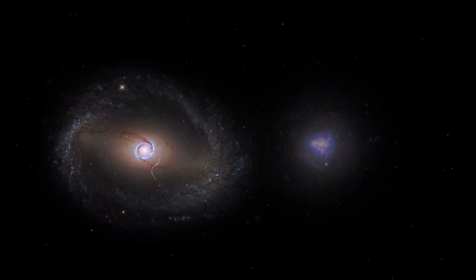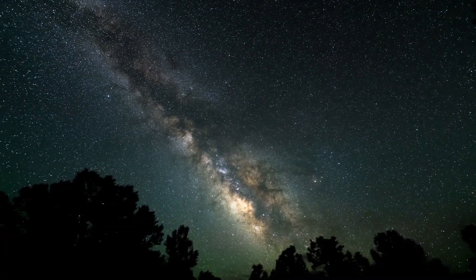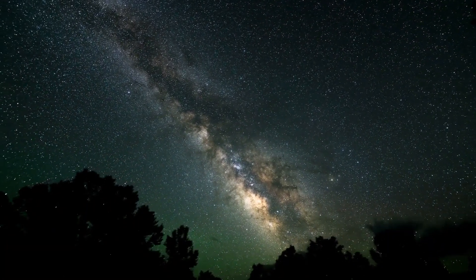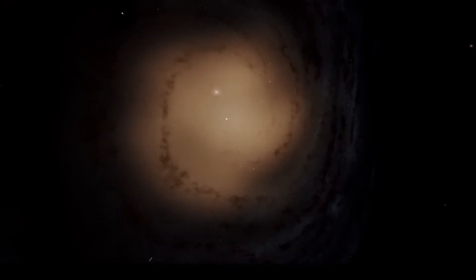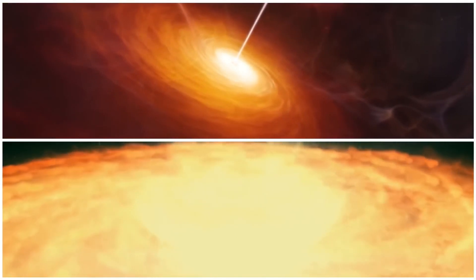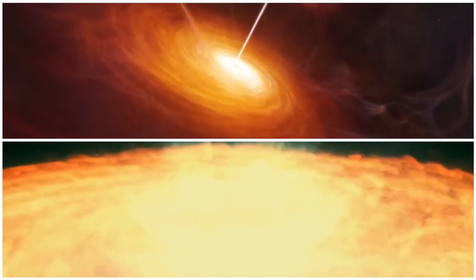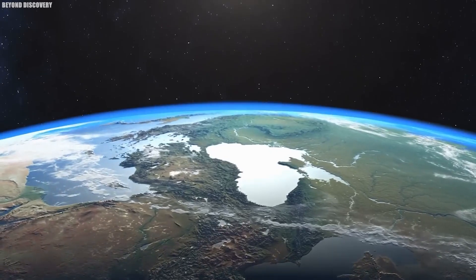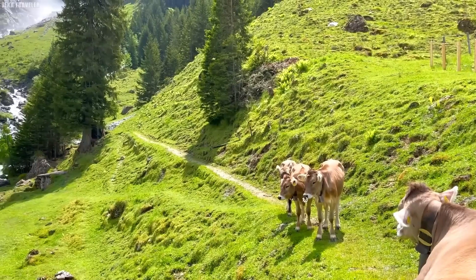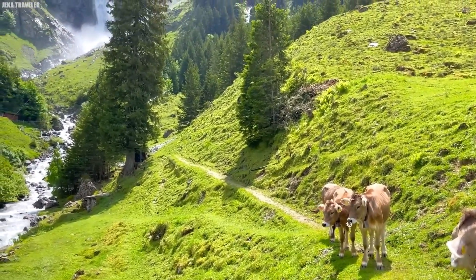And if our sun moves, Earth might feel the effects. If Earth gets closer to the sun, it might start feeling like a hot summer day all year round. That could mean trouble for polar bears and penguins as their icy homes melt away. But if we move farther away, we might need to break out the winter coats for an eternal frost.